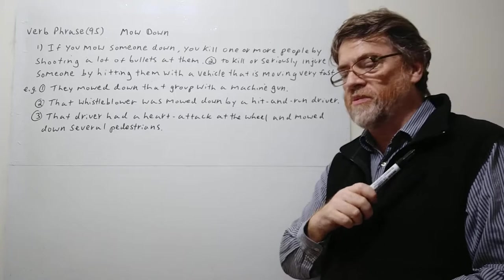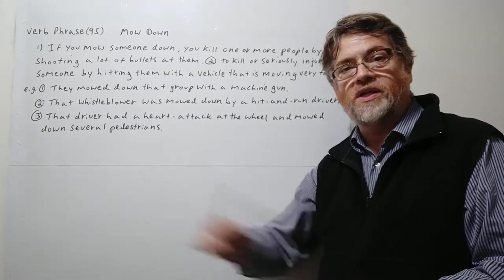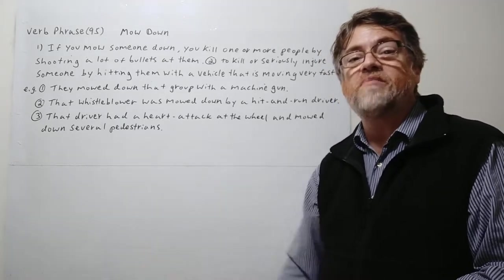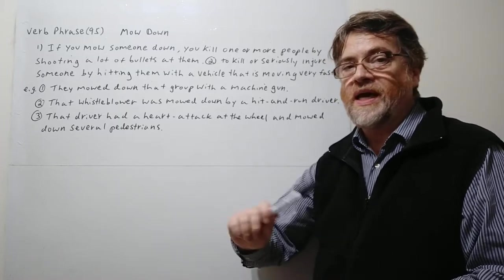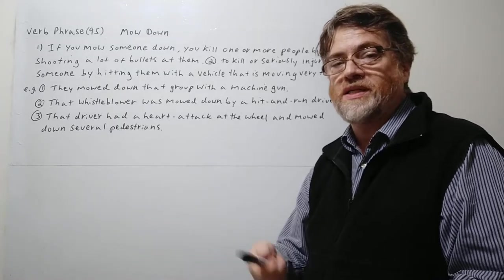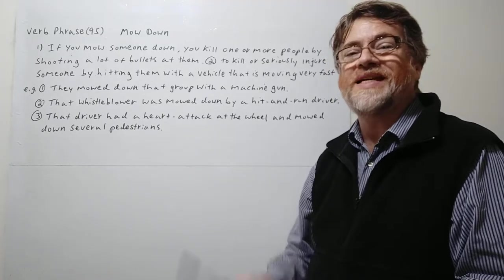A hit-and-run driver is when somebody just runs over somebody, they don't stop, they just keep going. If a driver hits someone and they don't stop, they don't try to stop for an ambulance, they just keep going. That's hit-and-run.